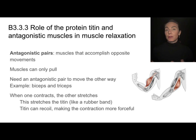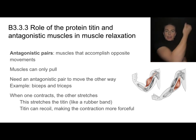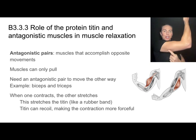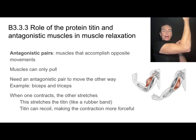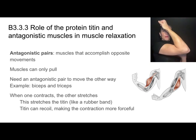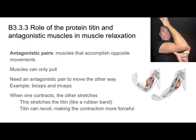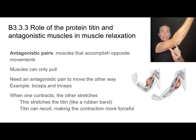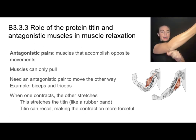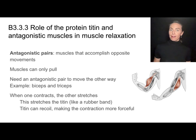A great example here is your bicep and tricep. Your bicep is located here and your tricep is located here. Your bicep is great for flexing your elbow, but if you want to straighten it back out, you need your tricep to contract and straighten out your arm.